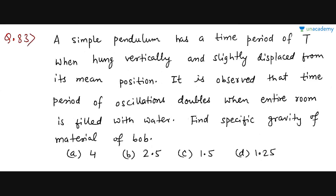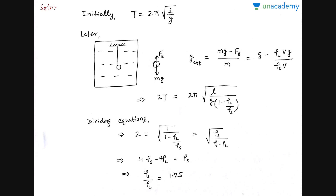The next question is on pendulums. NEET has not asked even a single question on pendulums in the last 5–6 years, so it may come this time. I've chosen a slightly complicated question to give you a good view. Initially, the pendulum is hung normally and oscillates under gravity, so time period T = 2π√(L/g). Note that T is proportional to √L and inversely proportional to √g. If taken to the moon, find the new g, then take the ratio. Also, the time period of a pendulum is independent of mass.